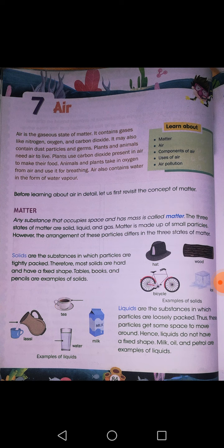Some things present around you like chair, table, rubber, pencil, and textbook — all of them are examples of solid. Some things present around you like milk, water, juice, and cold drinks — they are liquid. Some things around you like smoke, air, oxygen which you take in, carbon dioxide which you breathe out, and your cooking gas — they are gas.